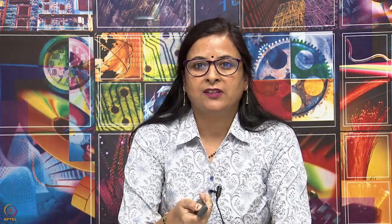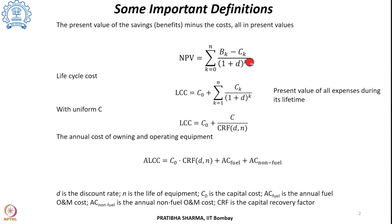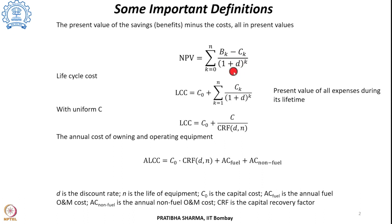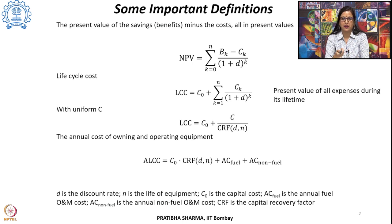In order to include the time value of money, there are other terms used, like net present value or life cycle cost. Net present value takes into account the savings minus the cost, with a discount rate in the denominator. The discount rate considers the time value of money — what an investment made today will be worth in the future. This is summed over the number of years: for the k-th year it is (B_k - C_k) / (1 + d)^k, where d is the discount rate and k is the year.